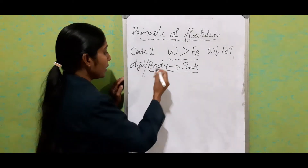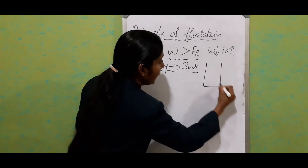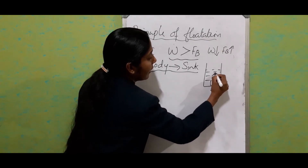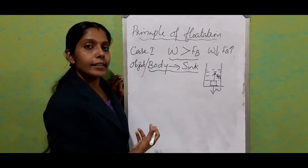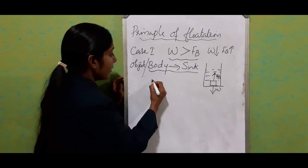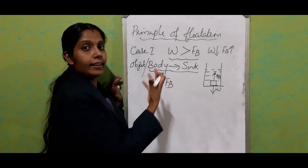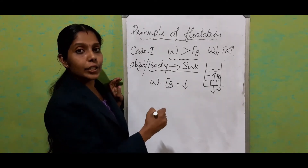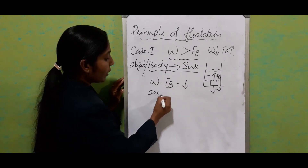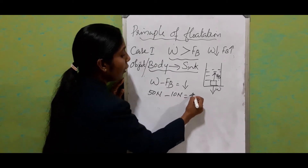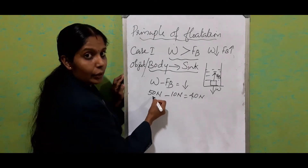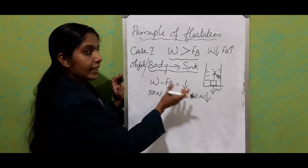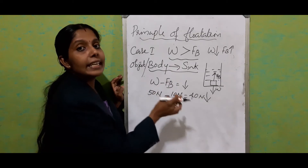Looking at the resultant force: the object is inside the liquid, weight acts downward and FB acts upward. Resultant force equals W minus FB. Here, weight is greater than buoyant force, so we get a net force in the downward direction. For example, if the weight is 50 Newton and buoyant force is 10 Newton, the resultant is 40 Newton acting downward. This means the density of the material is greater than the density of the liquid.